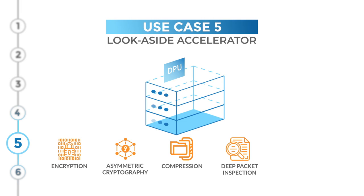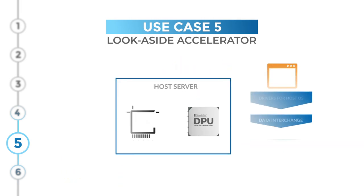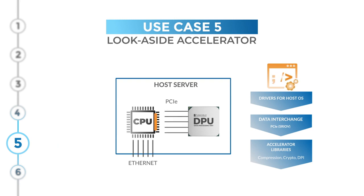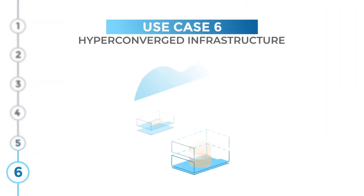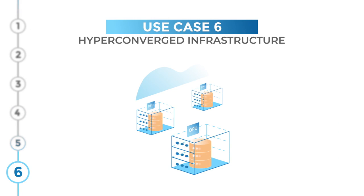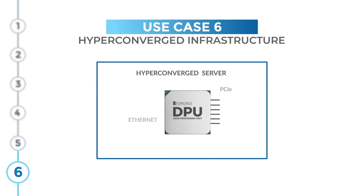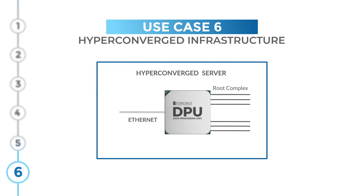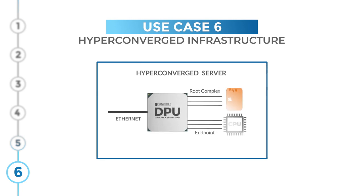The Fungible software suite includes drivers for the host OS and accelerator libraries that allow the host to offload these functions into the Fungible DPU. Lastly, the Fungible DPU can also supercharge hyper-converged infrastructure — combining multiple personas where PCIe ports support both root complex and endpoint, and the DPU acts as the data path hub bridging the network and compute and storage resources in hyper-converged servers.